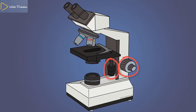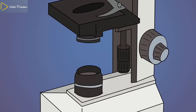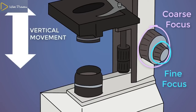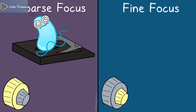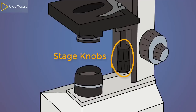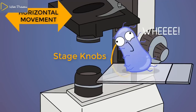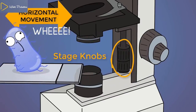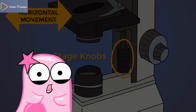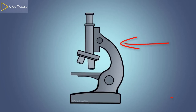You'll also notice there are a lot of knobs here. This large knob is known as the coarse focus, and this smaller knob is known as the fine focus. Both of these knobs raise or lower the stage, which helps with focusing. The coarse focus knob will move it more dramatically, whereas the fine focus knob moves it in smaller increments. These knobs — the stage knobs — don't move the stage up and down, but rather from side to side, helping you explore what's on the slide. Not all microscopes have stage knobs; sometimes you have to move the slide manually. This is the microscope arm and the base.